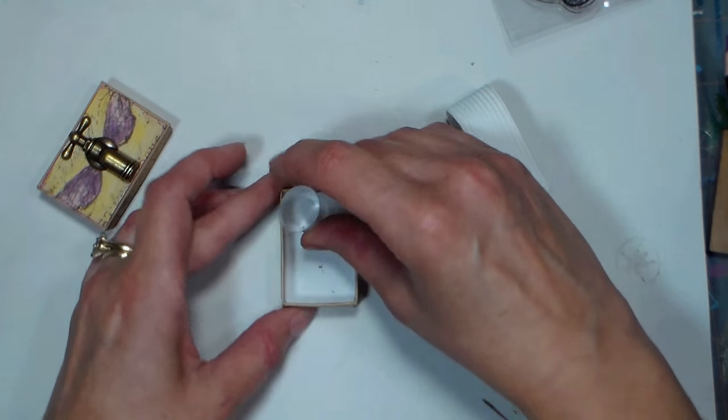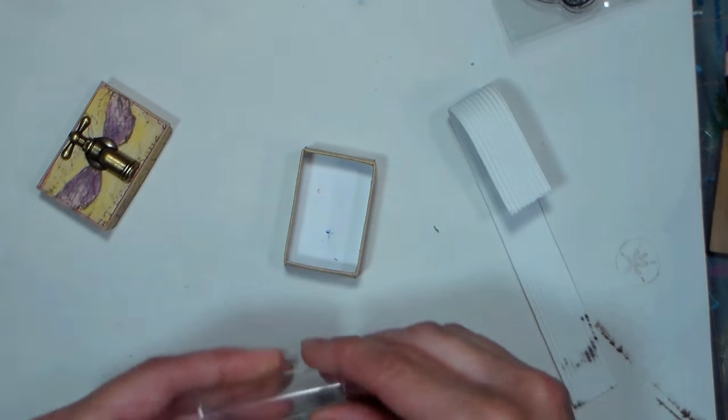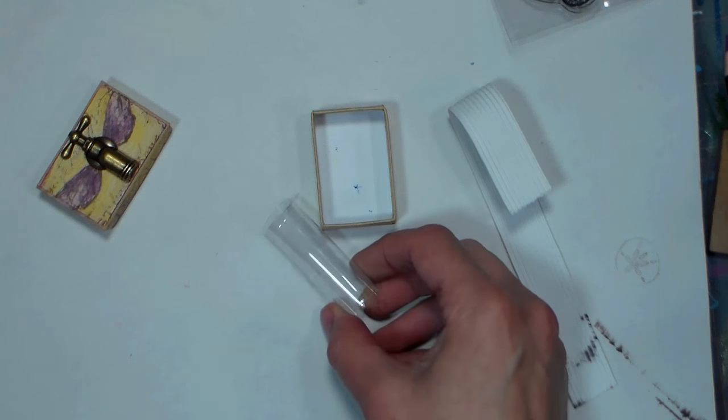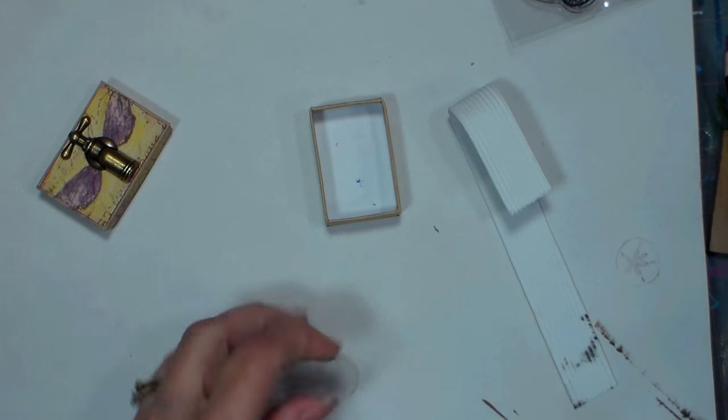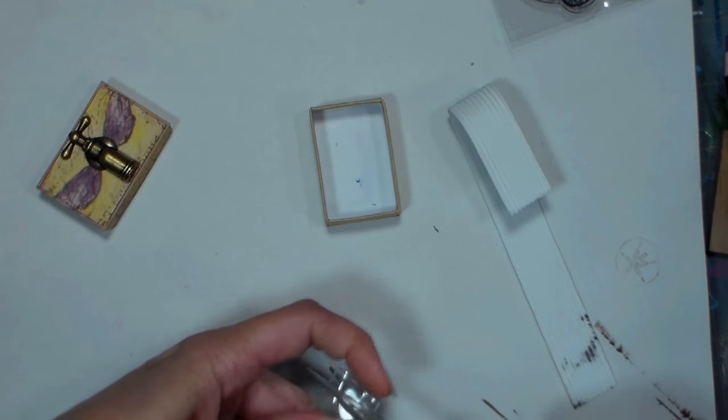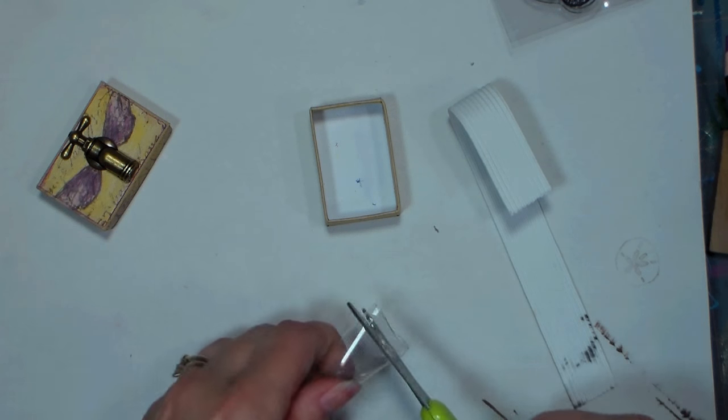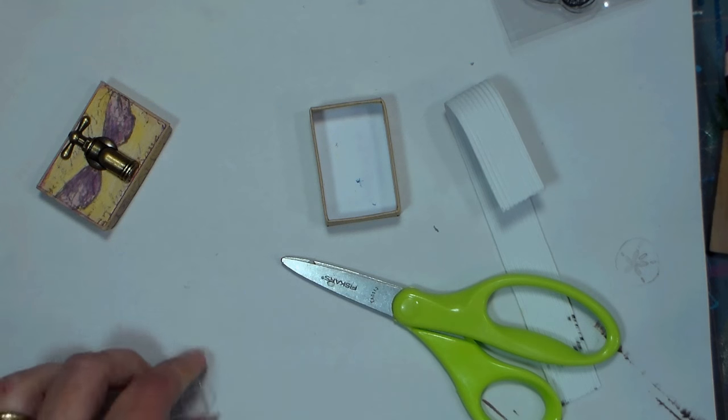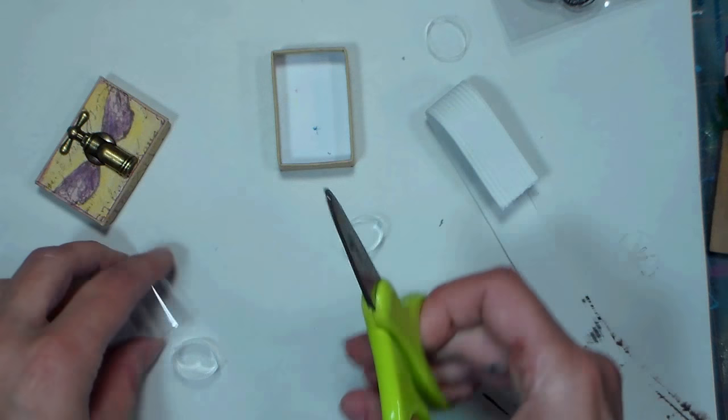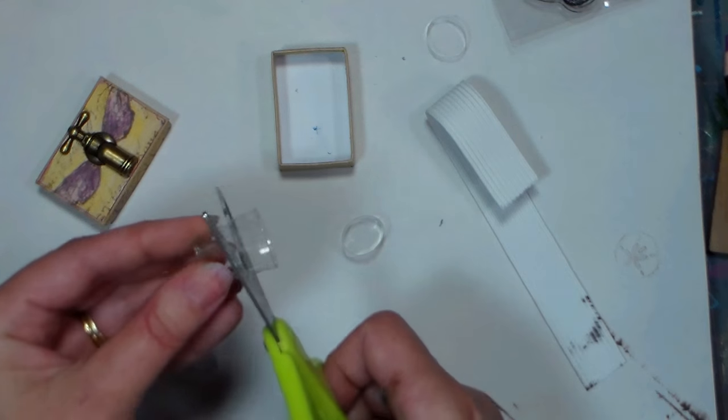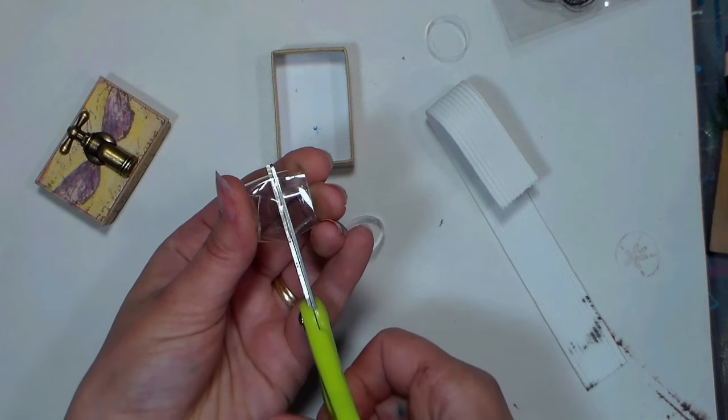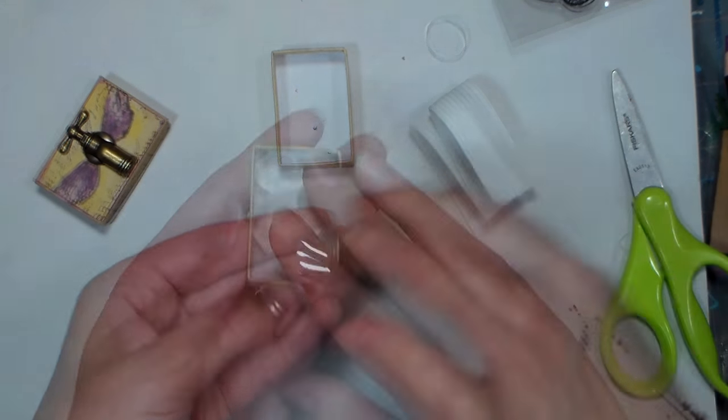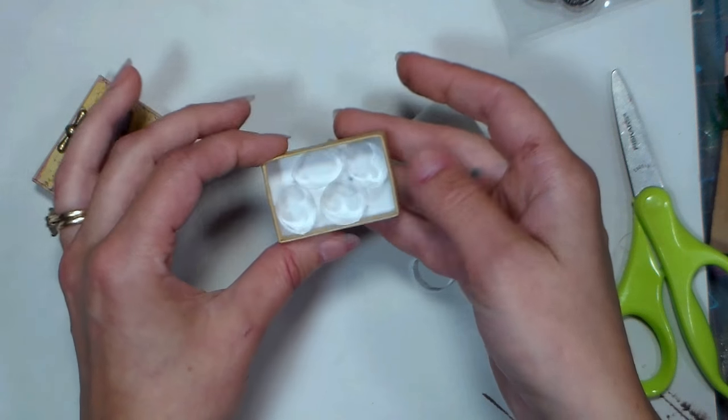Now I'm going to figure out what I want to do for the wells to hold my paint inside of my box, and I've been saving these little tubes. They come around the round paint brushes to protect their bristles when they're in the store or being shipped. Well, I saved a bunch of those thinking I'd make some beads out of them, but they worked perfect for this. So basically what I'm doing is cutting them at about half an inch thick and I'm going to glue them inside the box.